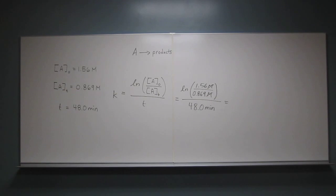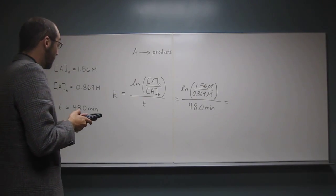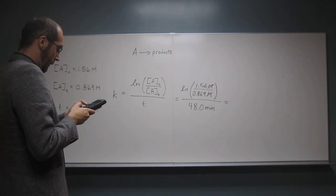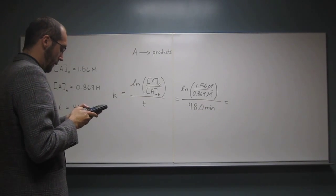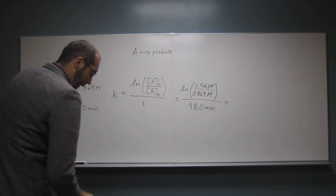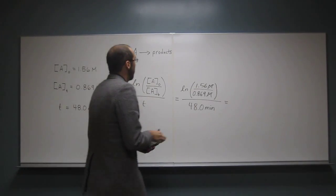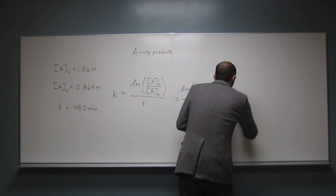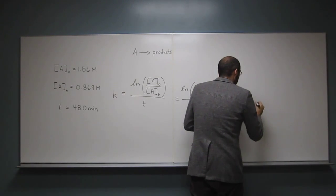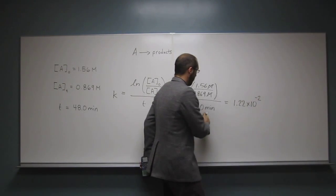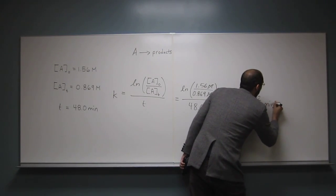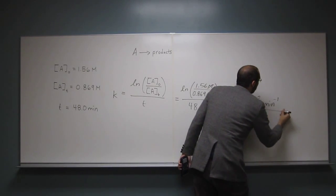Now get out your calculator. 1.56 divided by 0.869, take the ln of that, and then divide it by 48. I get an answer of 1.22 times 10 to the negative 2. And look at your units: per minute, or minutes to the negative one. That's what we were looking for.